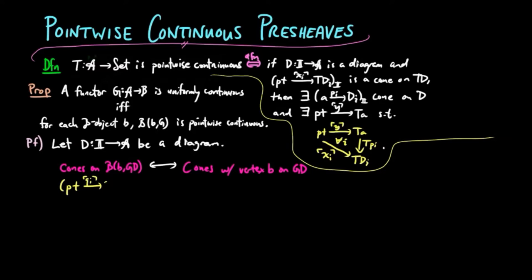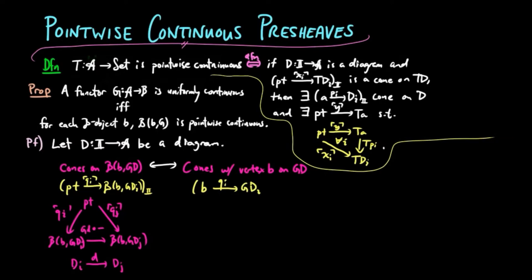On the left, a source QI is a cone if and only if the following diagram commutes in sets for each I arrow D. Similarly, the source QI on GD is a cone if and only if the following diagram commutes in B for each I arrow D.